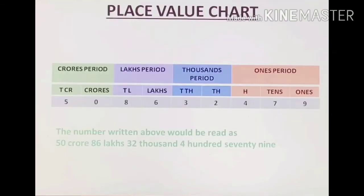Now let us understand it with a place value chart. The first three digits from the right side form one period. Then the next two digits are for the thousands period. Then the next two digits are for the lakhs period. And then the next two digits are for the crores period. The number shown above would be read as fifty crores eighty six lakhs thirty two thousand four hundred seventy nine.